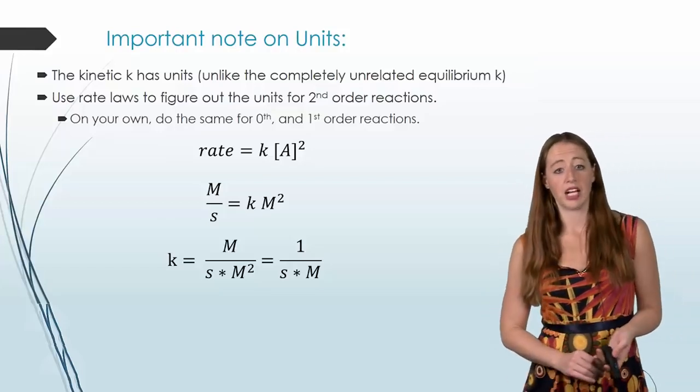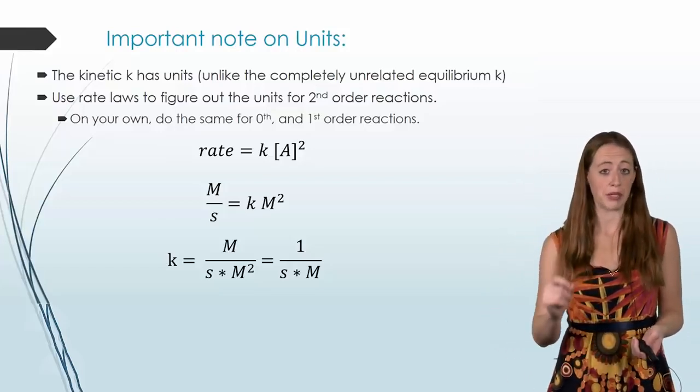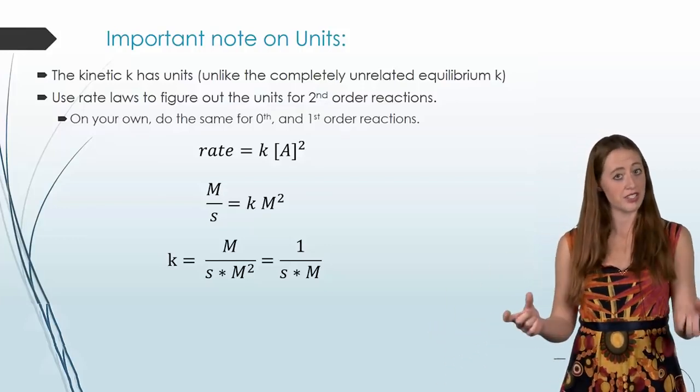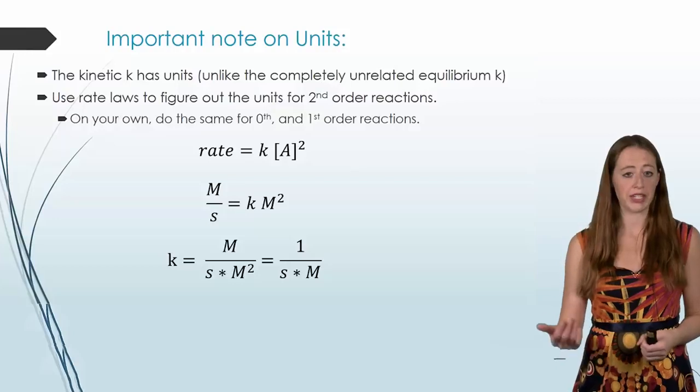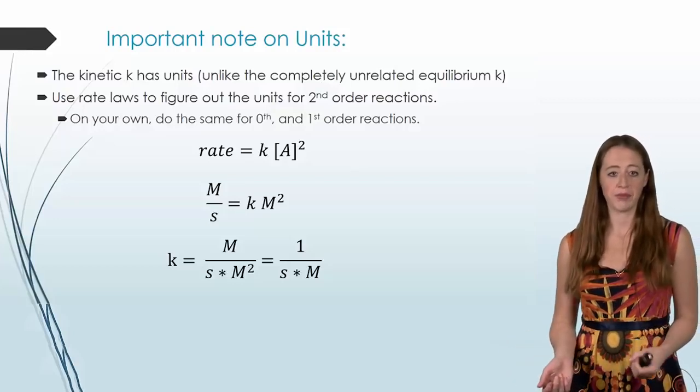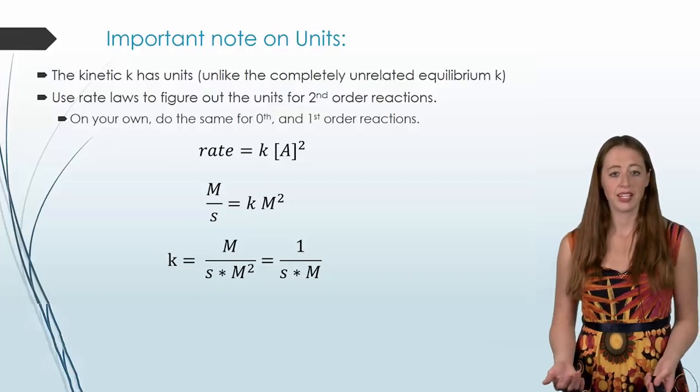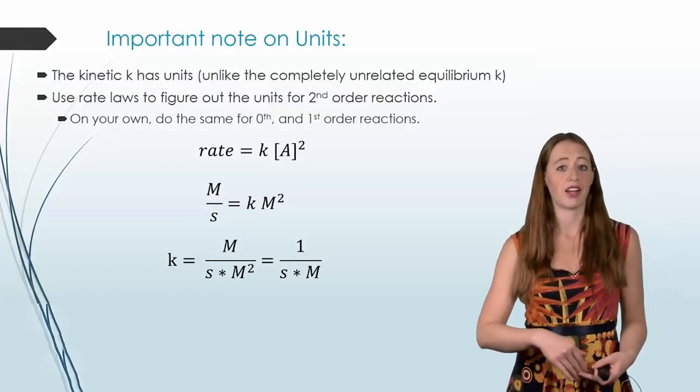So when we look at our rate law, k is going to have to be whatever unit required to match up with our concentrations and our rates. So for second order, I've written a very standard second order rate law. Rate is equal to k times concentration squared.